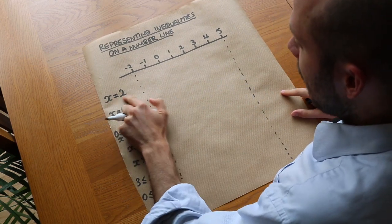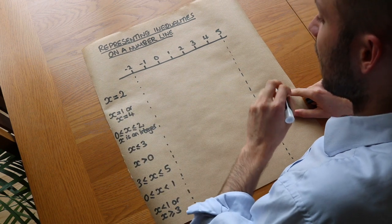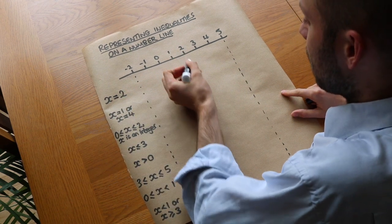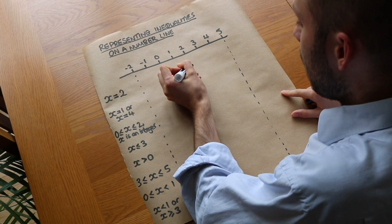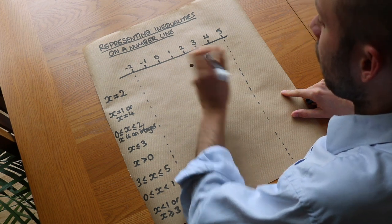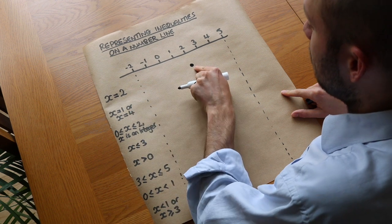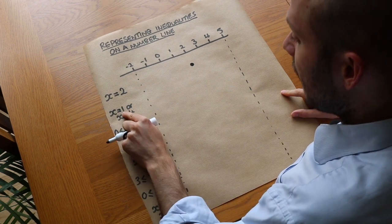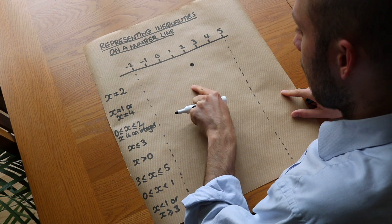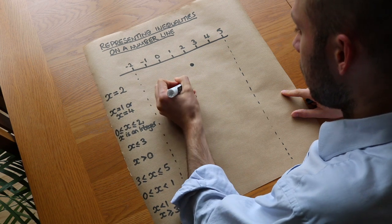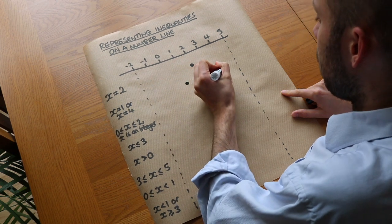Firstly, we've got x equals 2 — how can we represent that? We just represent it as a single dot. So where x is 2 on the number line, we put a single dot there, and that represents the fact that x could be 2. If we had x is 1 or x is 4, that means we could have a dot at 1 or a dot at 4.